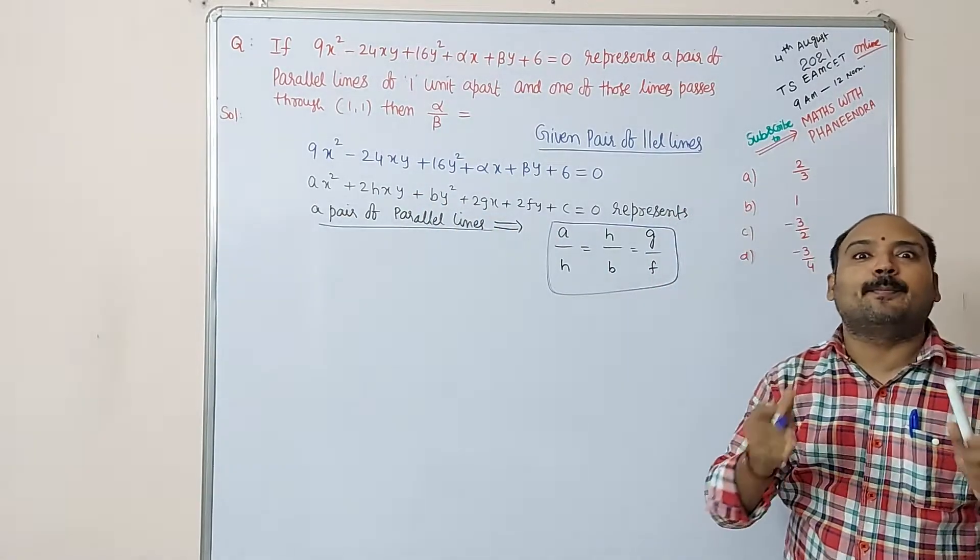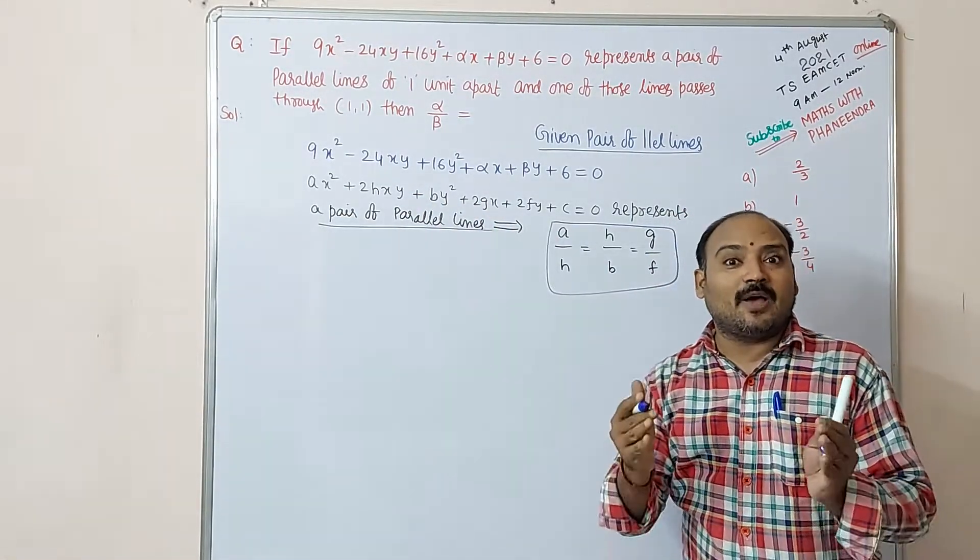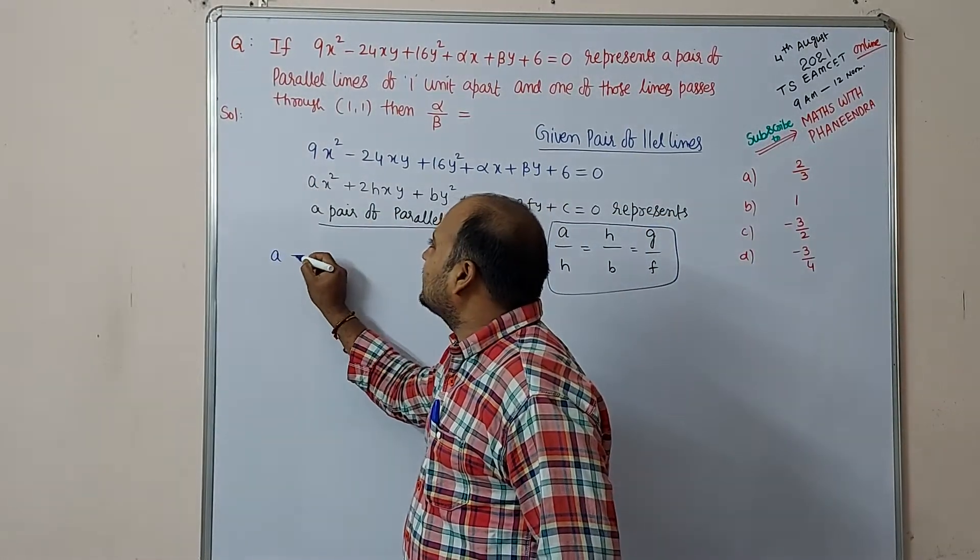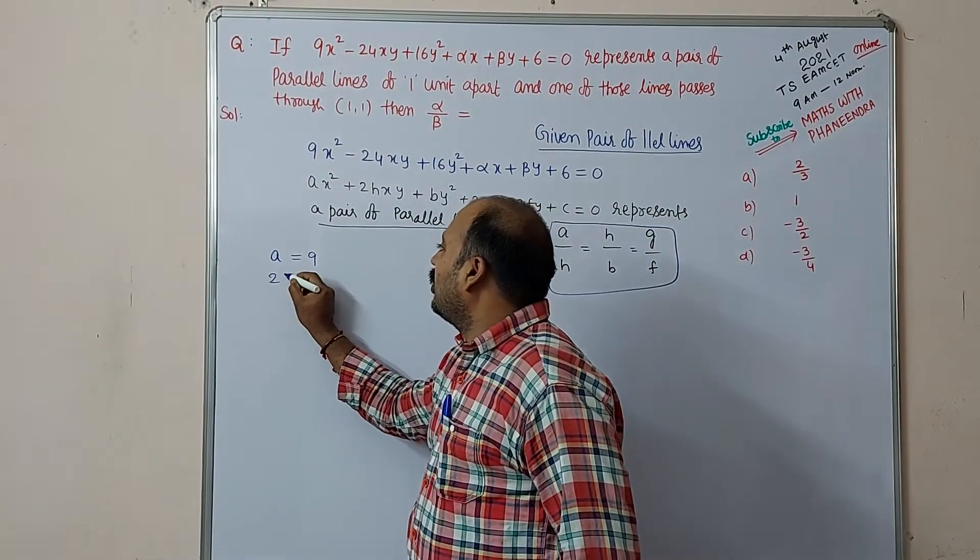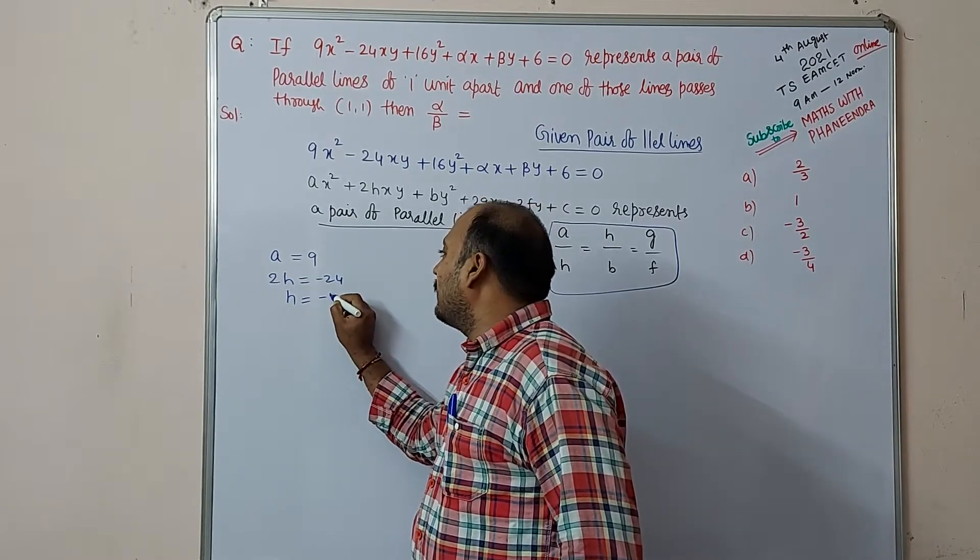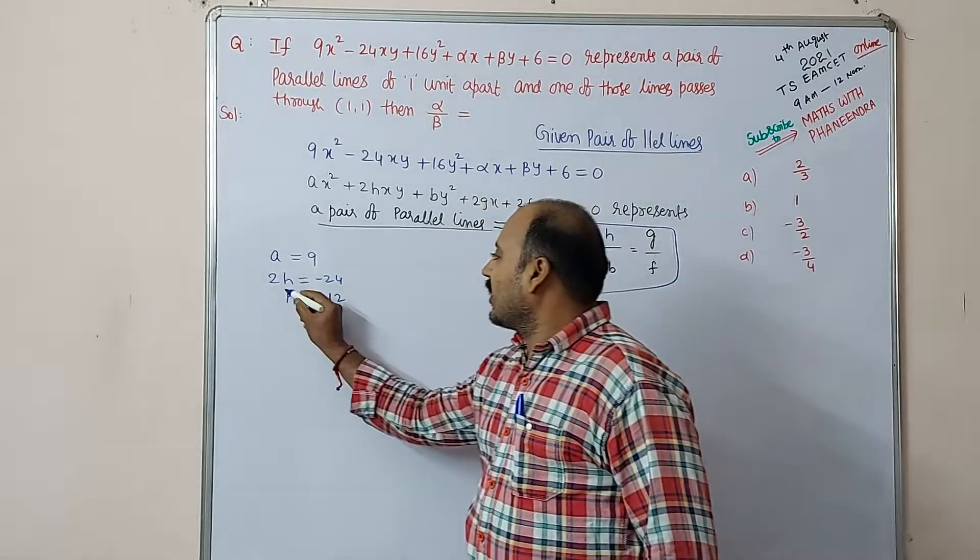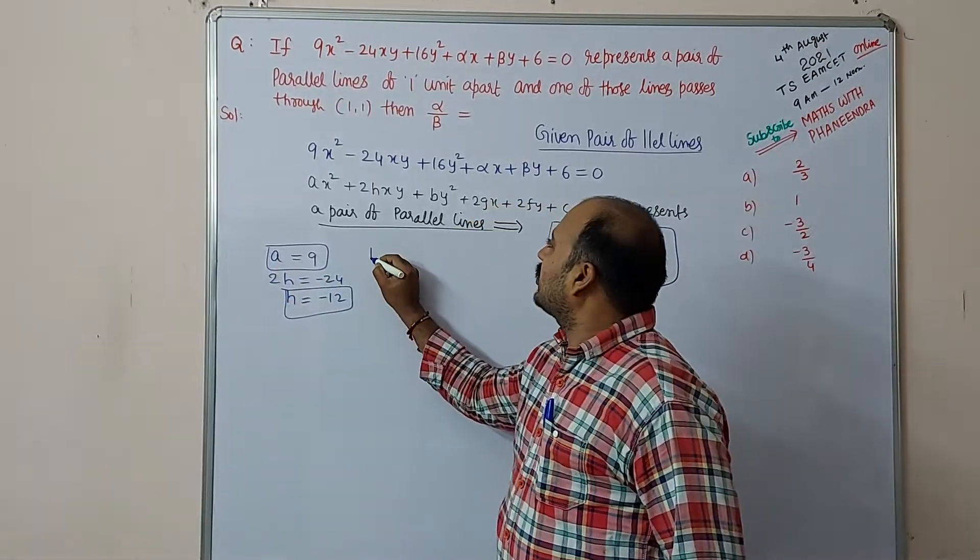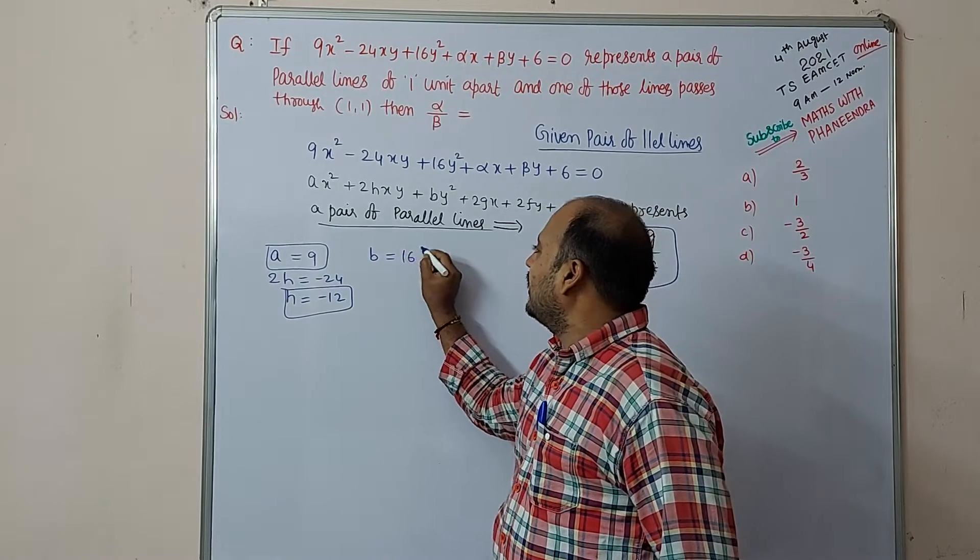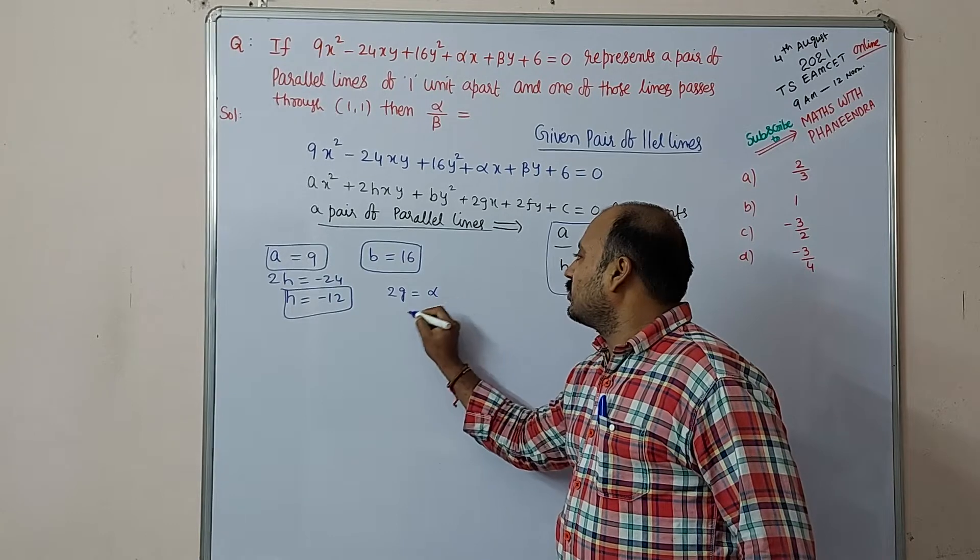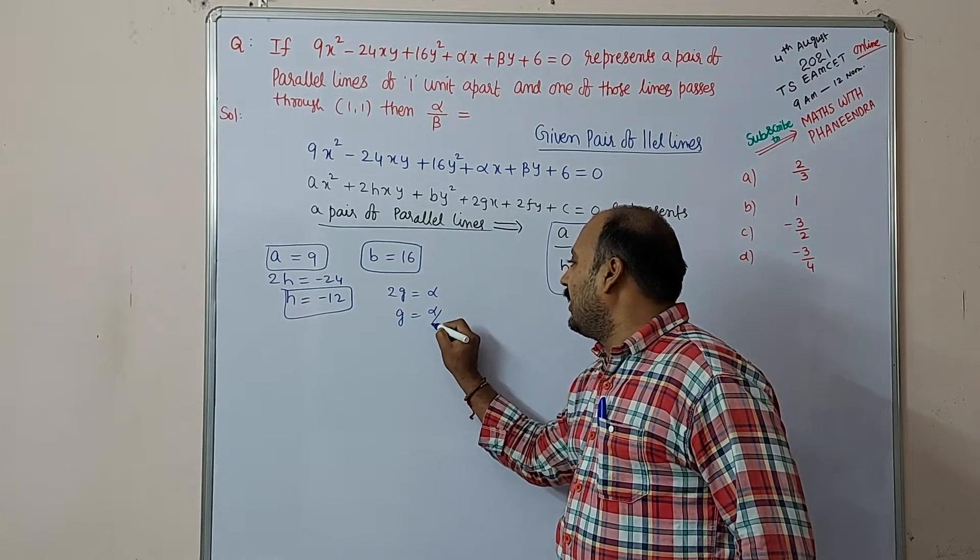So comparing x² coefficient, a = 9. 2h = -24, so h = -12. Next, y² coefficient b = 16. Next, 2g = α, so g = α/2.